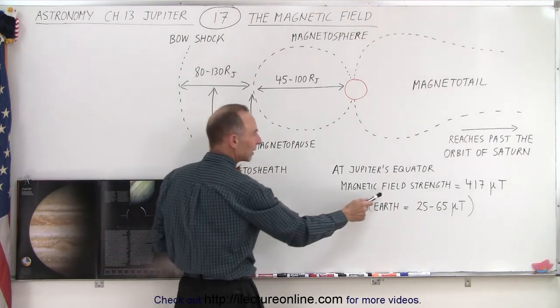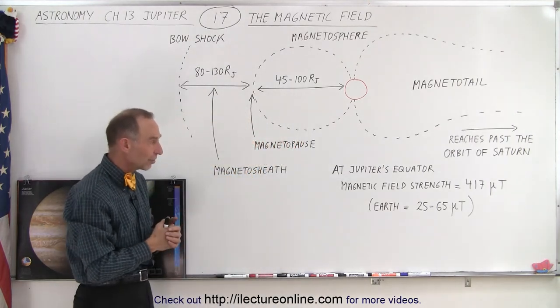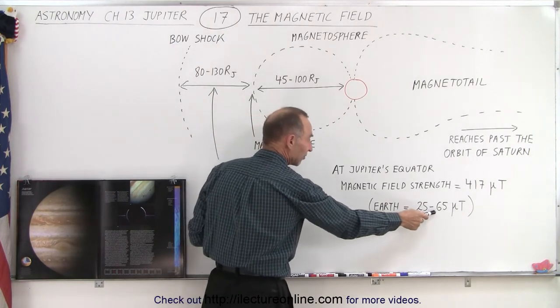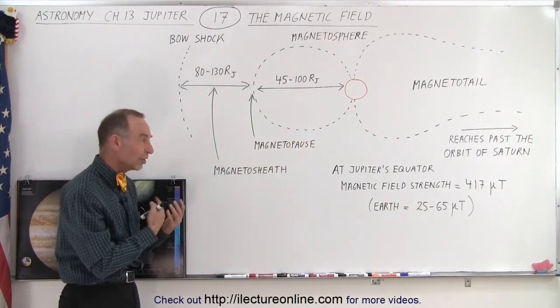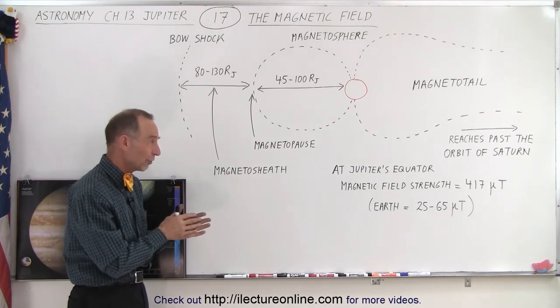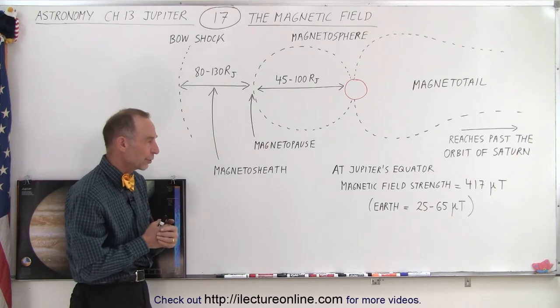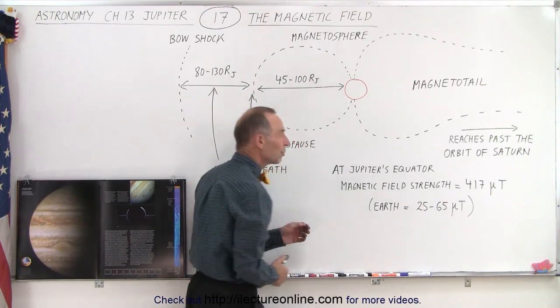At Jupiter's equator, the magnetic field strength is about 417 microteslas. If you compare that to the Earth, which is about 25 to 65 microteslas depending upon where on the surface of the Earth you are, you can see that the magnetic field at the surface of Jupiter is about 10 times the strength of the magnetic field of the Earth.